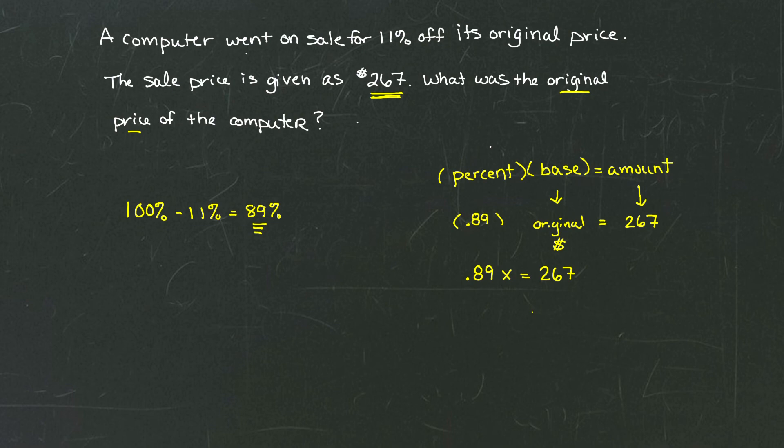How do we get x by itself? Well, we simply divide both sides of the equation by 0.89. And after we divide both sides by 0.89, that tells us that we have x left over.